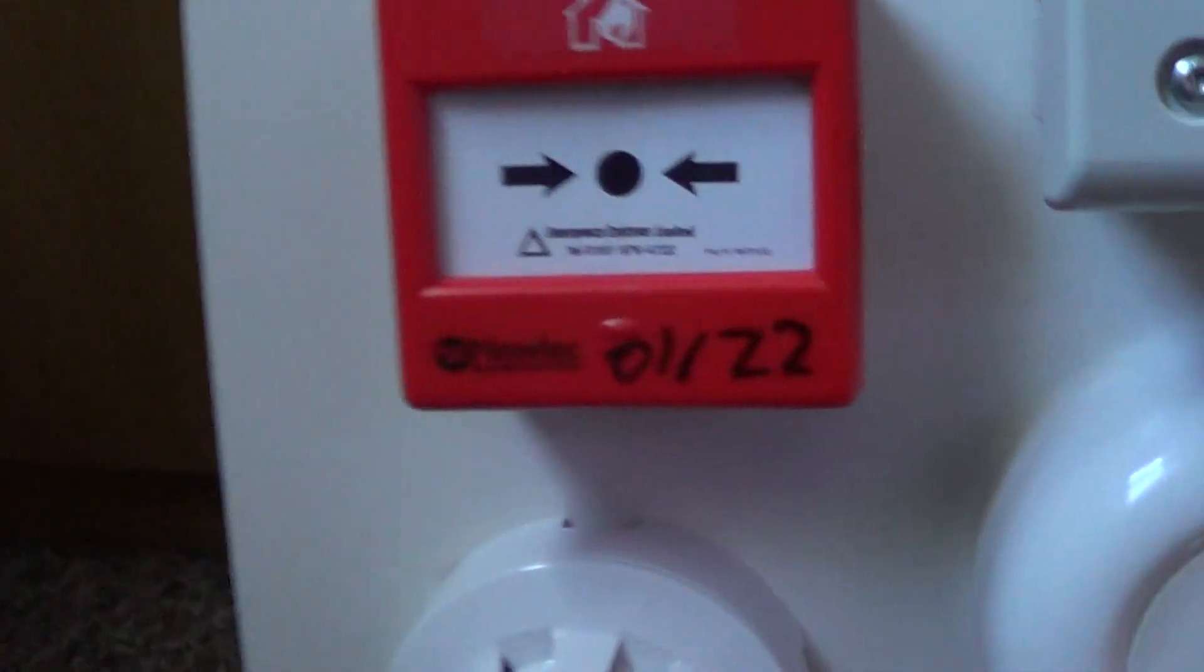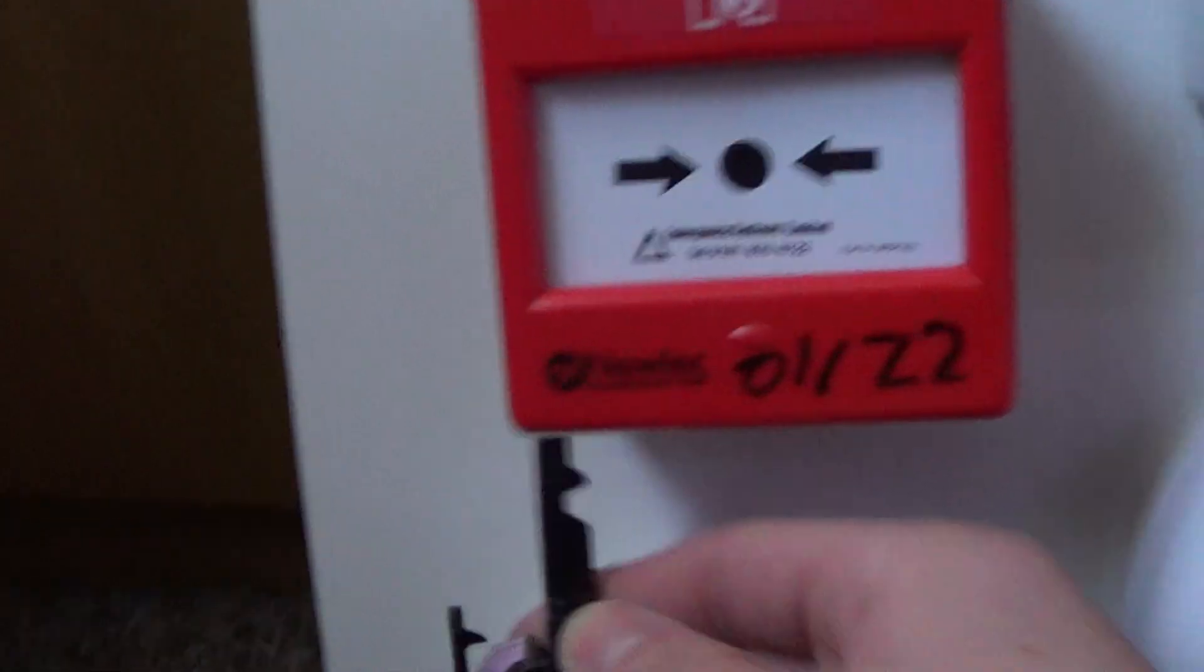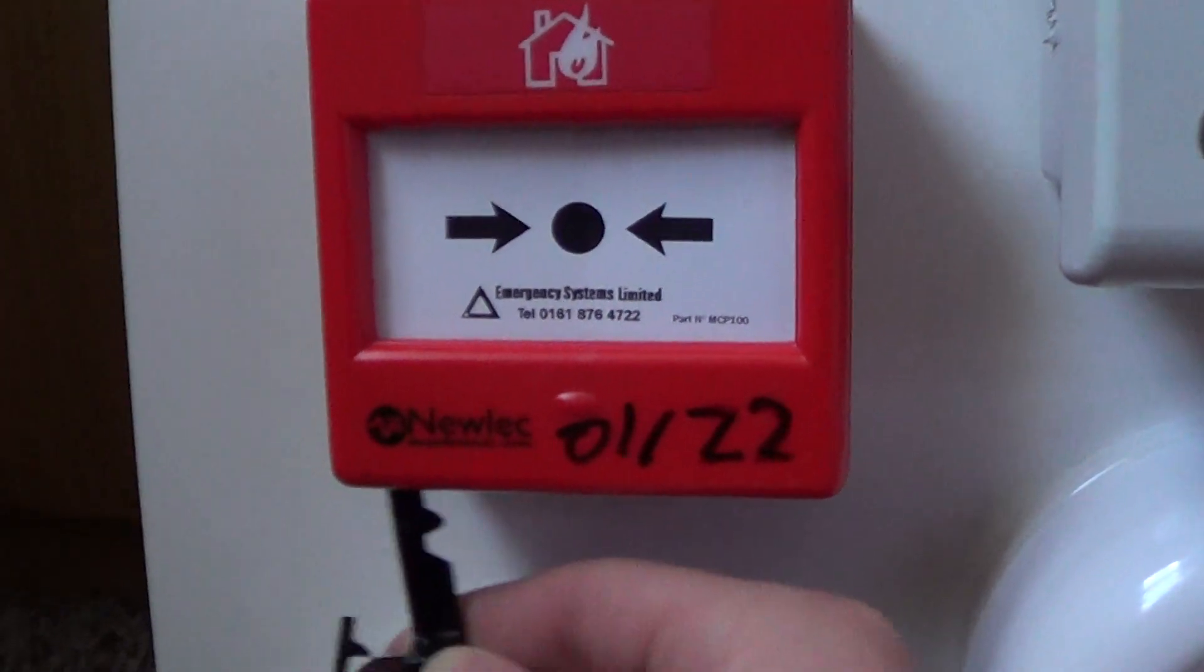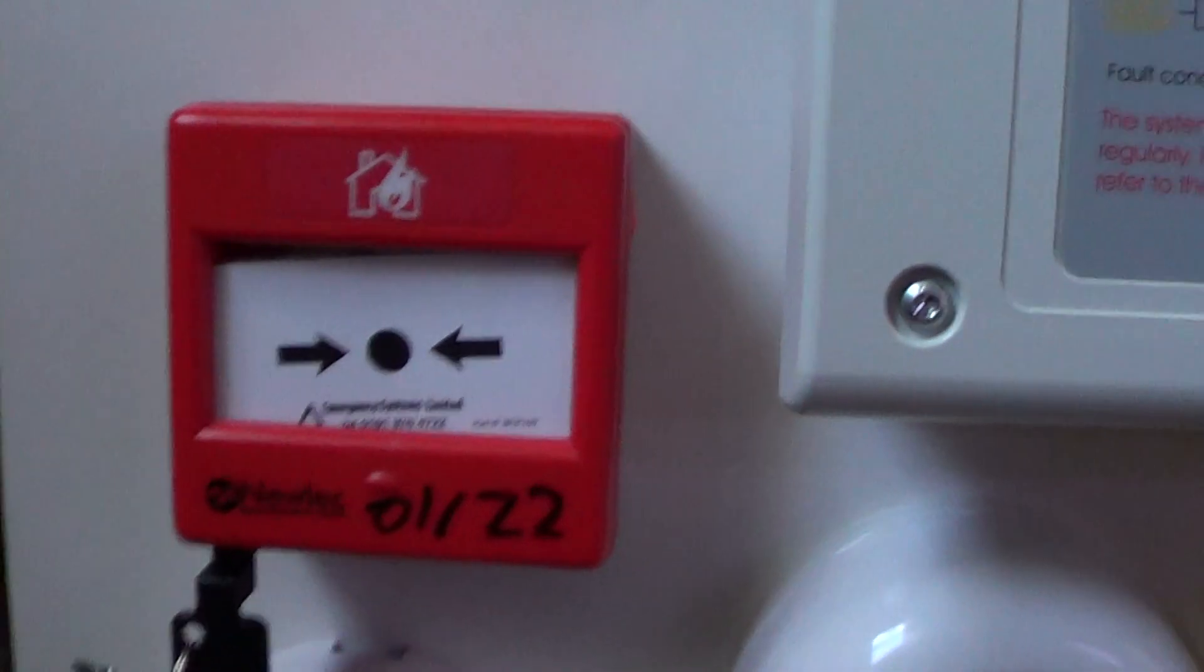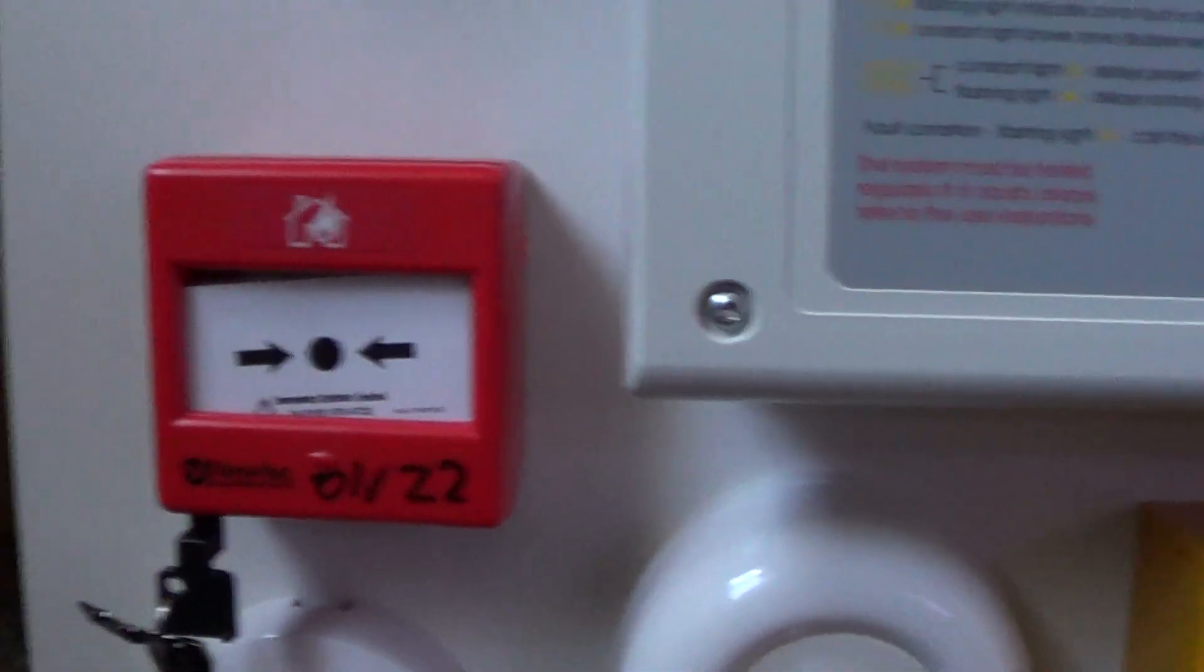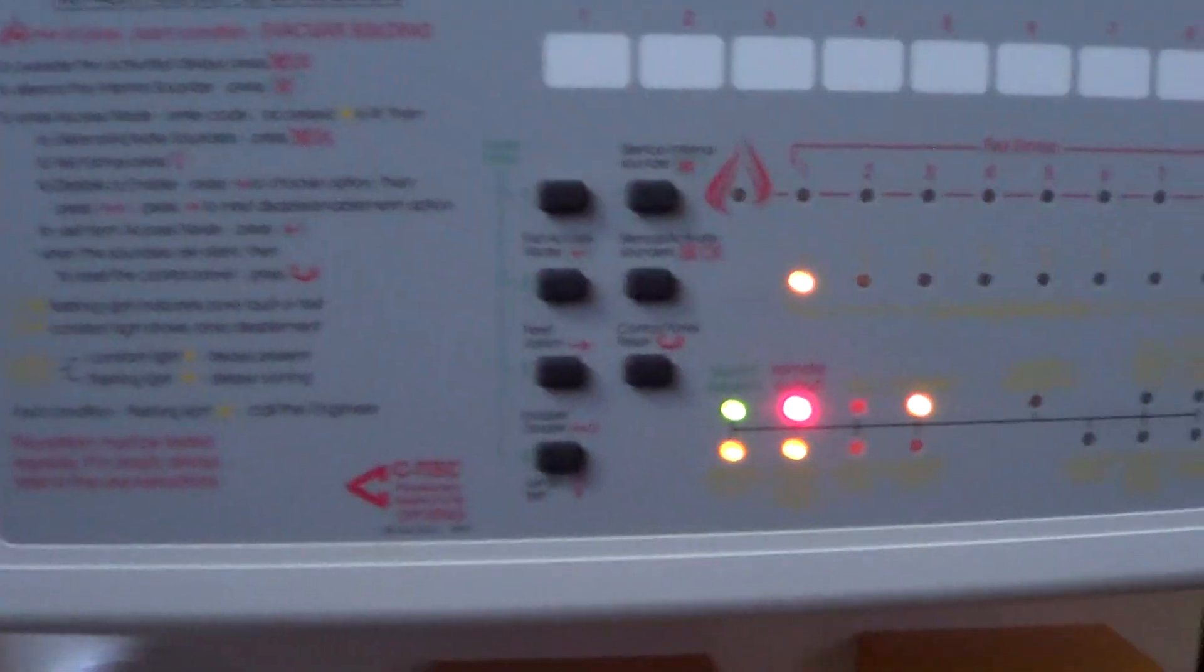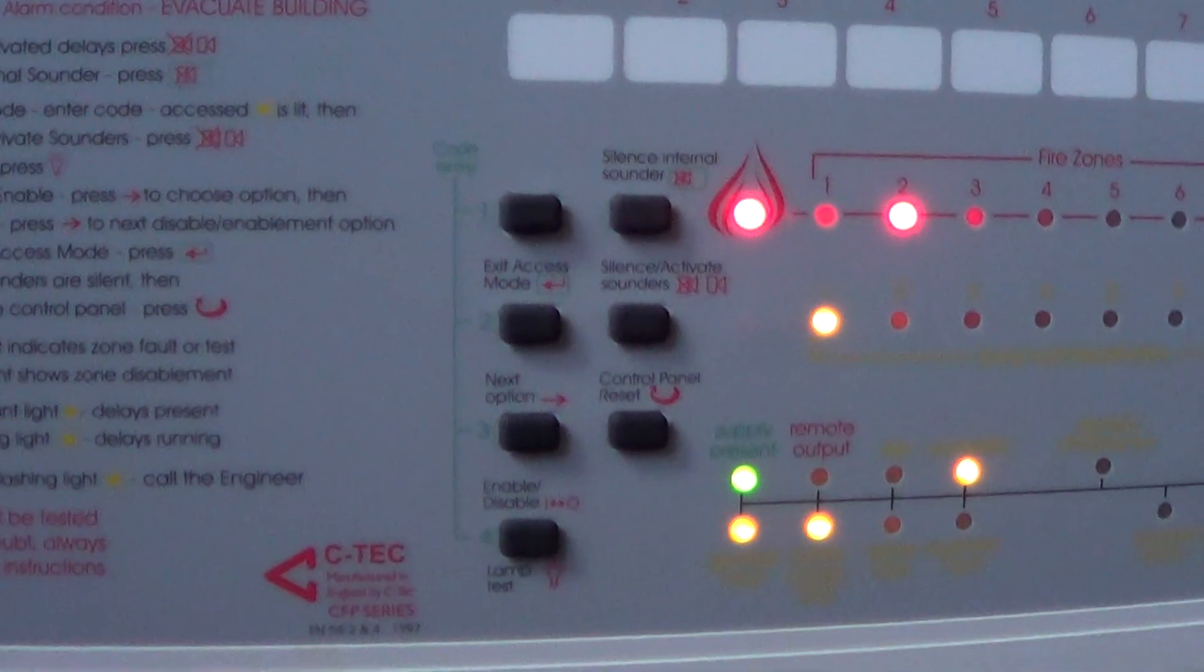Now I'm going to test zone two. I'll first start off with this one. This call point has glass in it and I'm not going to break that. The key's down. I'll just pull the key out to make sure it doesn't go off again. Reset the panel now.